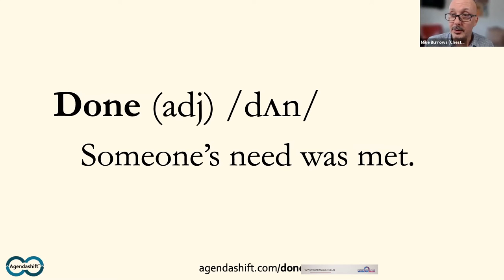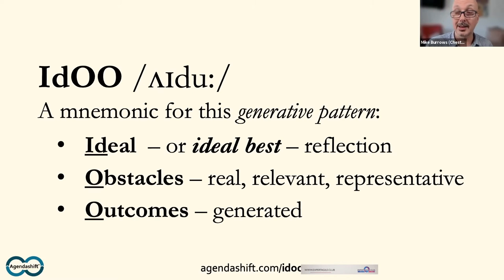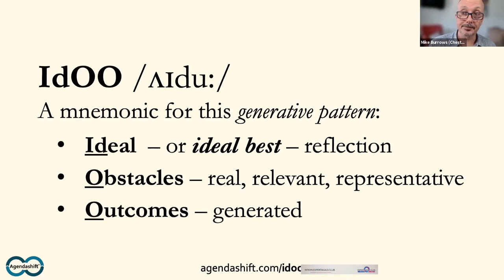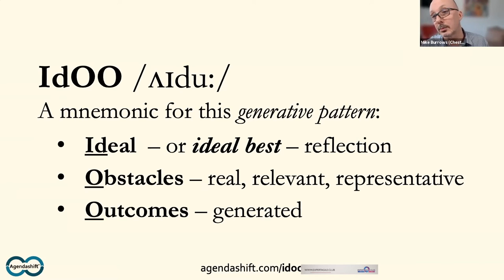So going from there — really why the Agenda Shift second edition? It's because so much of this process has become so much clearer in the three or four years since the first edition, and that made writing the second edition a really big opportunity. One of the clarifying things is this pattern — it's called the I²DO pattern. I²DO as a mnemonic for Ideal, Obstacles, Outcomes.